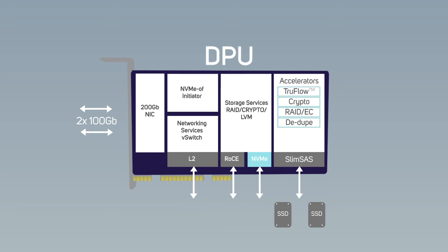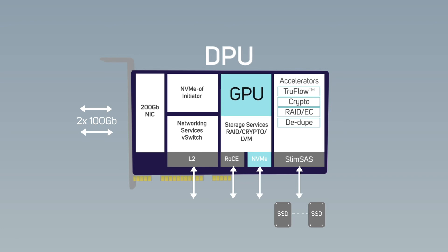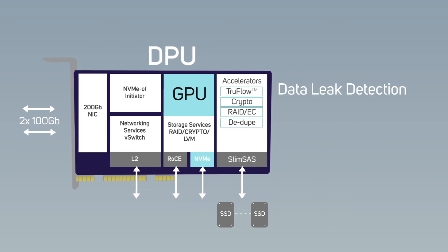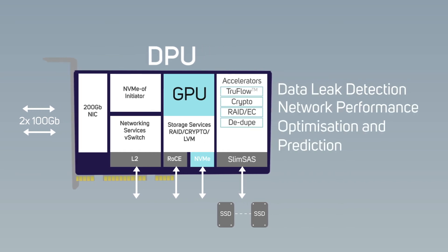Although DPUs are pretty new and could be called cutting edge, technology never stops evolving. Already there are DPUs close to launch that contain a high-performance GPU and an integrated PCIe 4 switch. This creates a dedicated path for data transfer between the GPU and the network, enabling a whole new class of applications involving AI-based networking and security — such as data leak detection, network performance optimization and prediction. We'll come back to these exciting advancements in more detail in a future video.